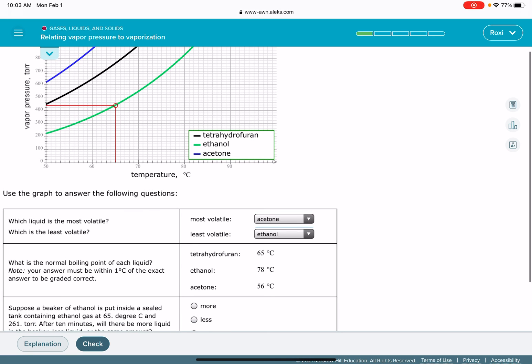So this tells us that in this scenario, we have 261 torr of gas. That's not as much as ethanol wants. Ethanol wants 440. So since in this scenario, the vapor pressure is too low, ethanol is not happy with that. It's going to evaporate some more of its gases up so that it can get up to 440 torr.